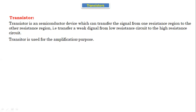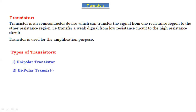This transistor is used for amplification purposes, which increases the signal strength. If you see the types of transistors, the first one is a unipolar transistor and the second one is a bipolar transistor. The application of the transistor is to amplify the signal, which increases the signal strength — this is called amplification.